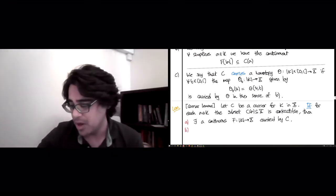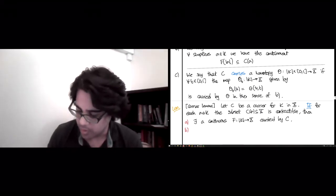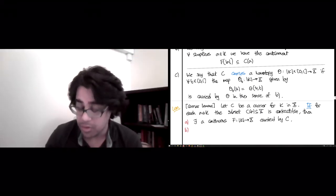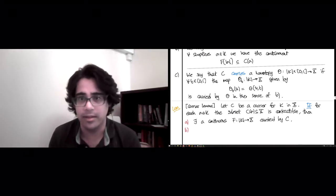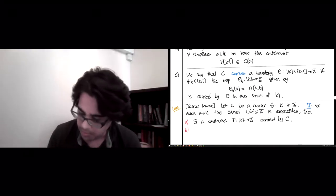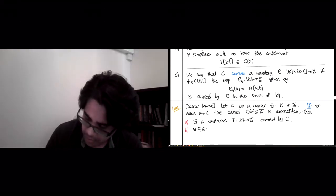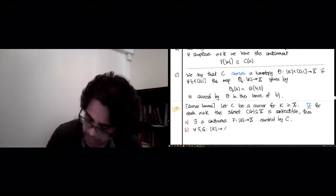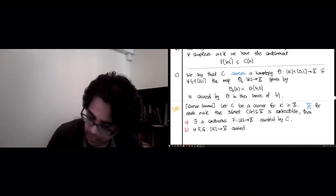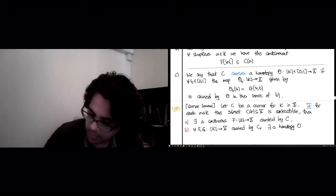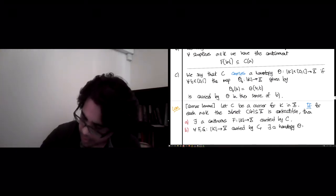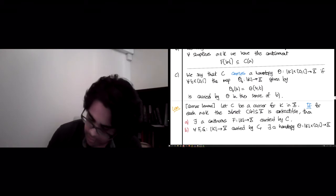B, these maps cannot differ homotopically. So what that means is, the previous statement said there exists. It didn't say there was only one. There could be several maps carried by C. But for all F, G from K to X, carried by C, there exists a homotopy theta from K cross [0,1] to X between F and G, also carried by C.